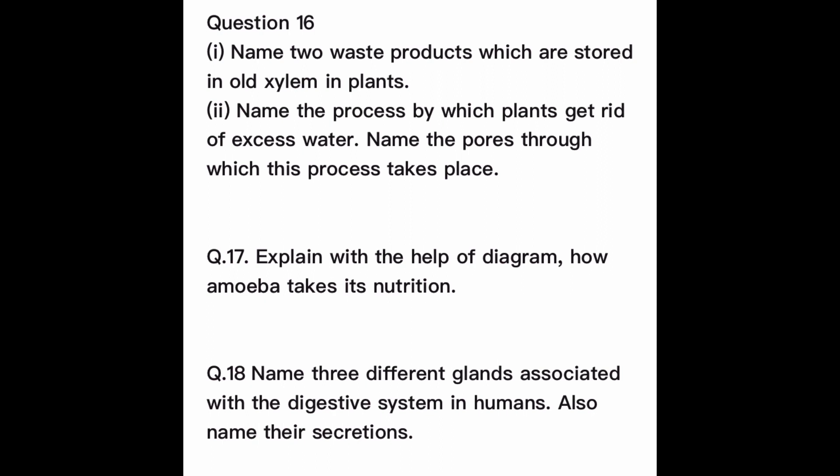Question number 17: Explain with the help of a diagram how amoeba takes its nutrition. The five steps are: ingestion, digestion, absorption, assimilation, and egestion. Please follow your NCERT as well as your reference book for the diagram. It is a very simple diagram to understand, covering these five steps of nutrition in amoeba.